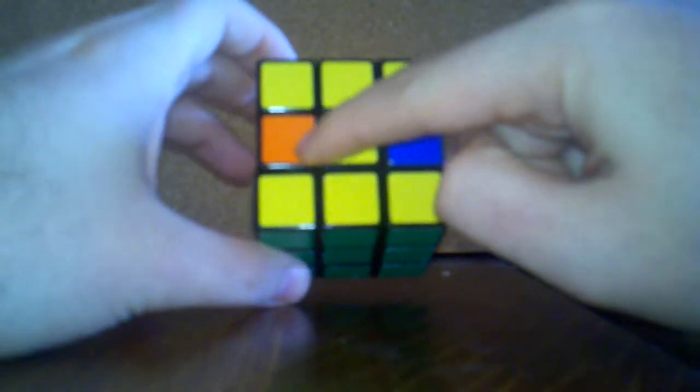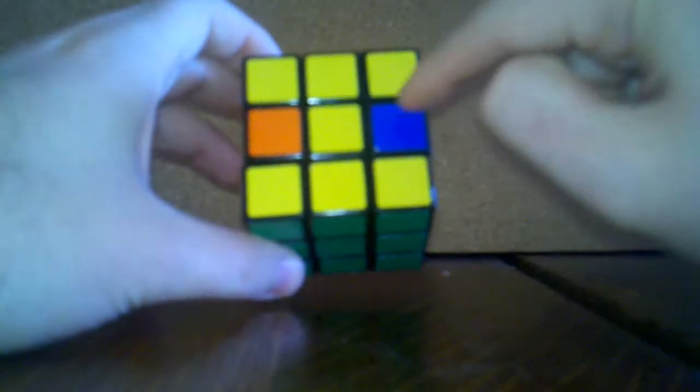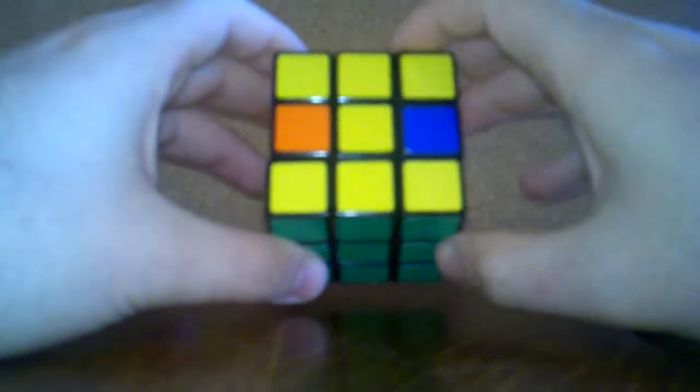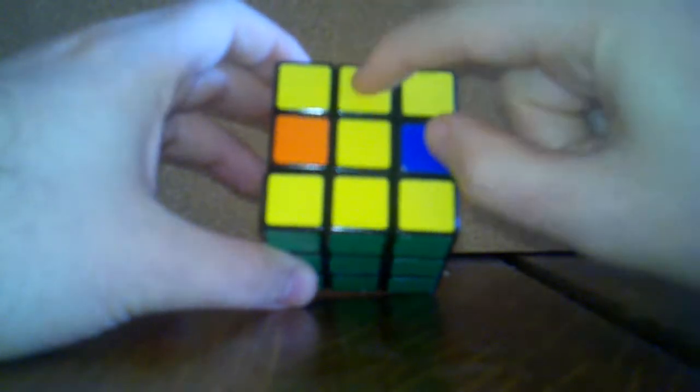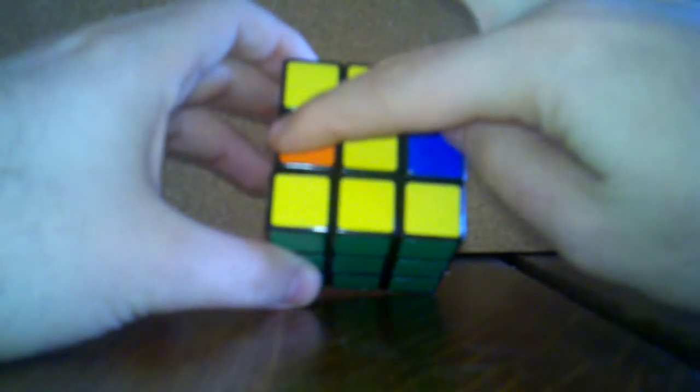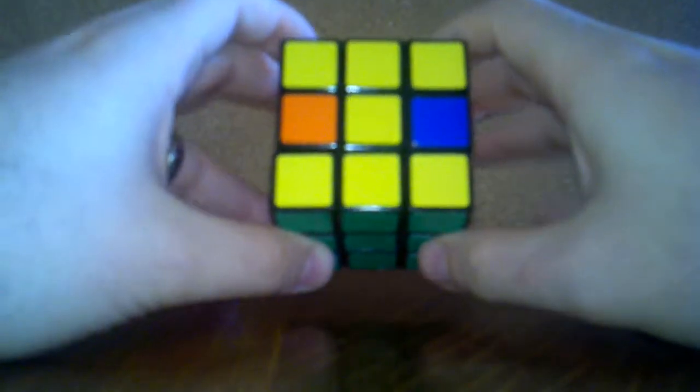But this side is not completely yellow - you can see we have two pieces, an orange and a blue, that are not yellow. Sometimes you'll have two pieces that are next to each other, sometimes you'll have two that are across, sometimes you'll have four. But anytime any piece is not yellow, you do the hamburger.